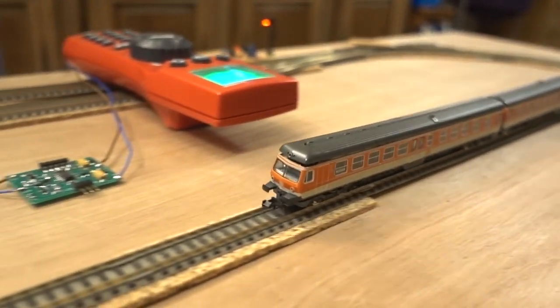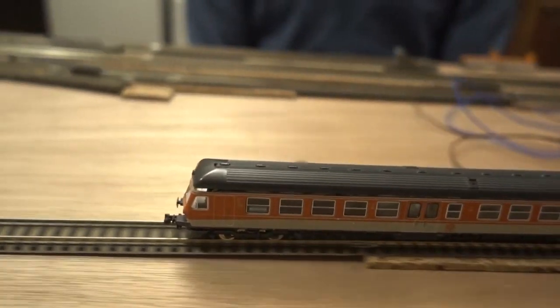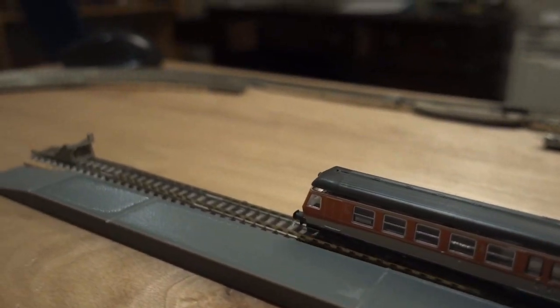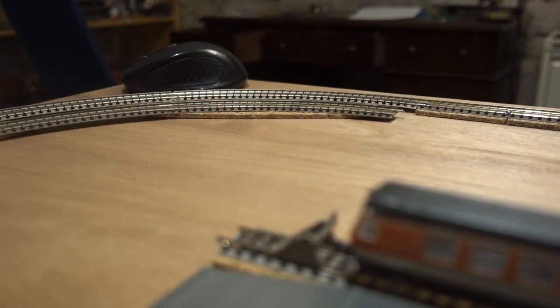The train starts at speed step 11, speeds up to speed step 17, slows down to speed step 11, and then trips the TOTI, which causes it to slow down and stop.